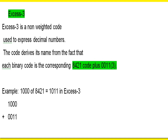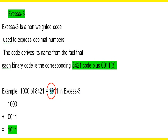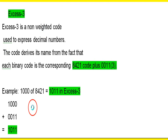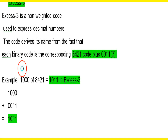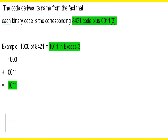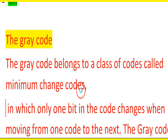Take 1000 plus 3 — 3 in binary is 0011. You need to add in the 8421 system. Adding 0011, which is decimal 3, gives you the Excess-3 code.